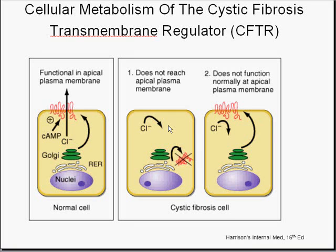You can very easily understand what's going on with cystic fibrosis. Cells like you see here have a nucleus and cytoplasm. They have things along their surface membranes called channels — there's a channel for chloride, a channel for sodium, a channel for potassium — and these channels are dependent on proteins for proper function.